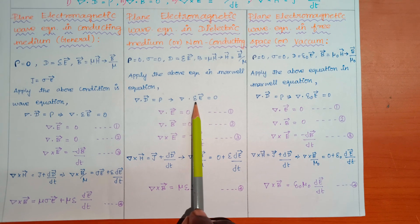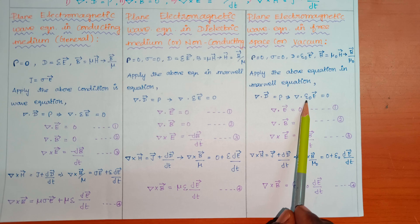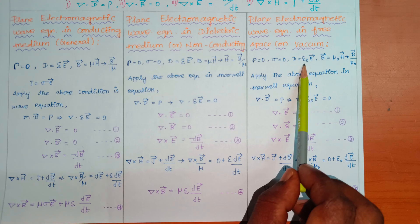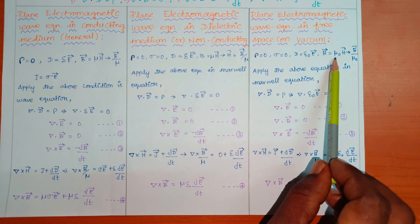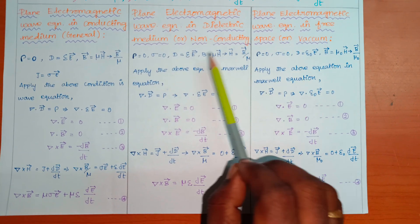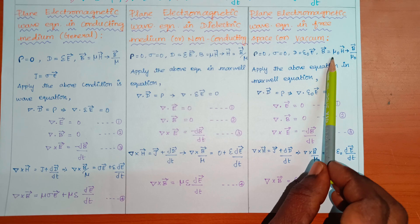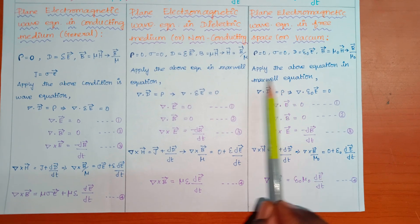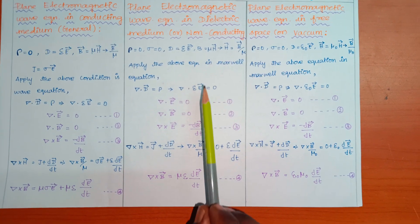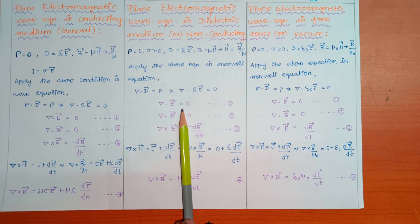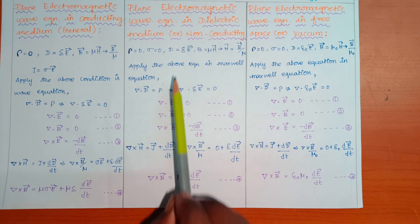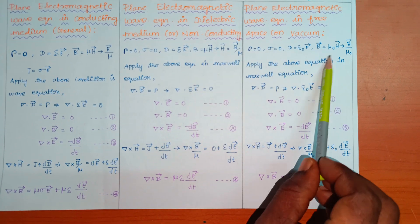For free space or vacuum, instead of epsilon we use epsilon naught, and instead of mu we use mu naught. This is because it is free space. All other derivations are similar to the non-conducting medium case, with epsilon replaced by epsilon naught and mu replaced by mu naught.